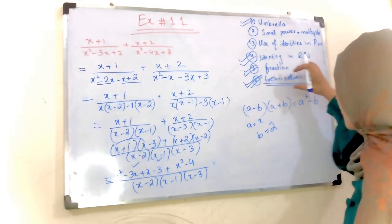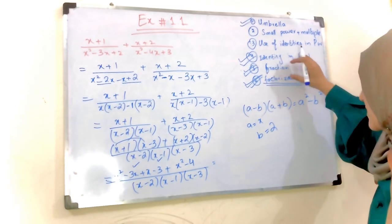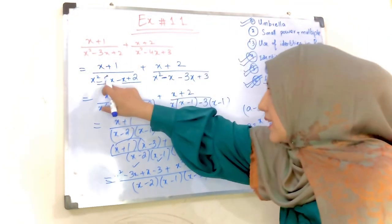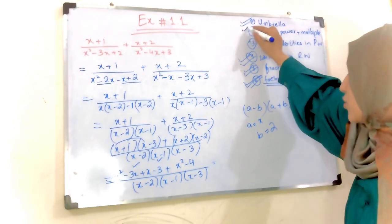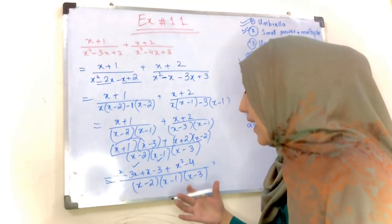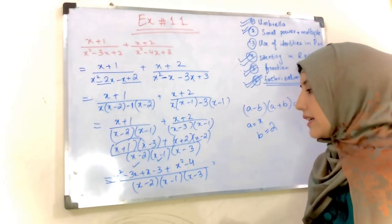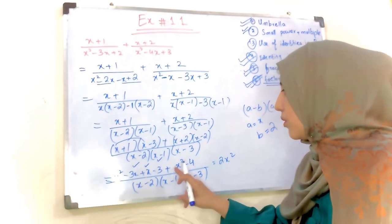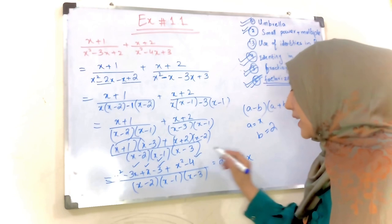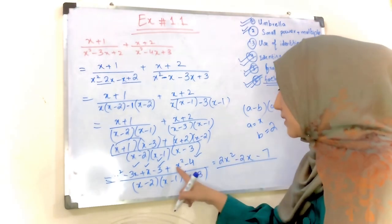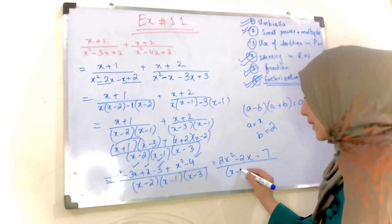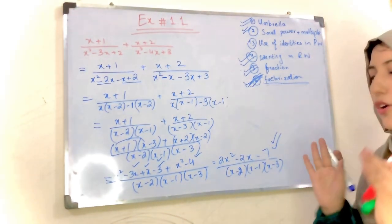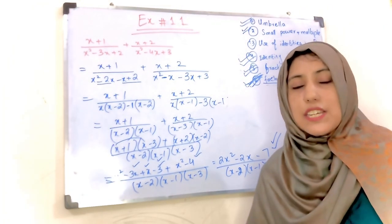Yahan tak check kijiye ke hum fraction ko bhi apply kar chuke hain, factorization ko bhi apply kar chuke hain, identity ko bhi apply kar chuke hain — even ke hum small powers ko bhi common le chuke hain yahan denominator mein is step mein, aur amrela method ko bhi hum apply kar chuke hain. Ab isko simplify karte hain simple algebra ki addition ke through — toh yahan aayega: 1 aur 1 = 2, x squared minus 3 plus 1 minus 2, x minus 3 minus 4 minus 7. Denominator mein yeh numbers aadenge. So guys, this is the required answer — hope you guys enjoyed this video.